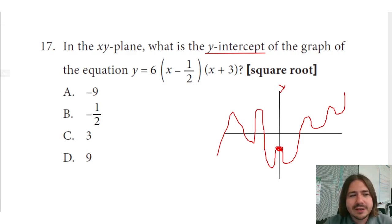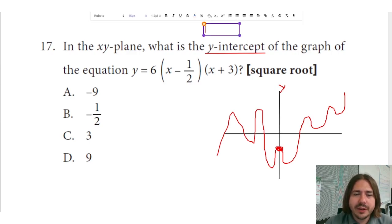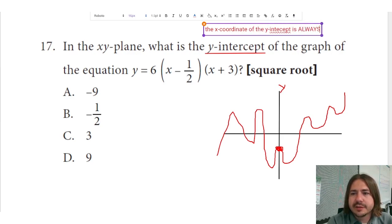So wherever the y-intercept is, the x value or the x-coordinate of that point is always going to be 0. So the x-coordinate of the y-intercept is always 0.